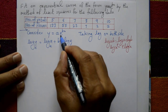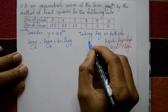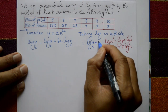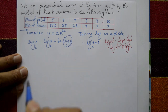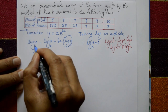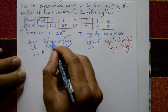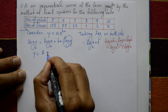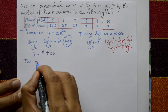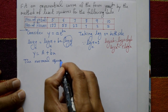For the term e^(bx), applying the property gives bx · log e (base e), and since log e (base e) = 1, that part equals 1. So we define capital Y = log y (base e) and capital A = log a (base e), giving Y = A + bx.